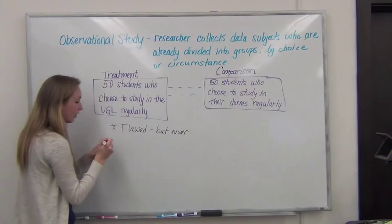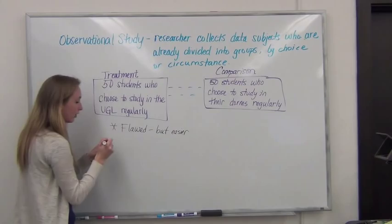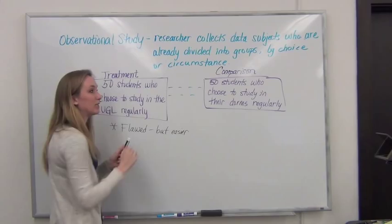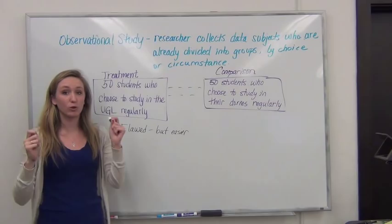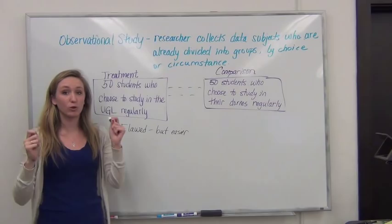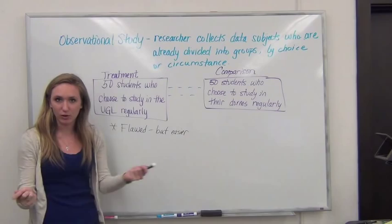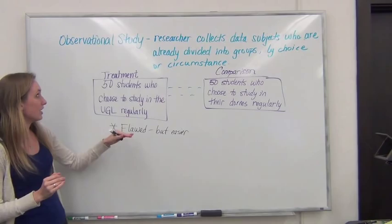And again, they're flawed because we can't assure ourselves that any difference that we see between these two groups is only, only because of this treatment. There could be other differences as well, because these participants decided which group to be in, or just by circumstance were in different groups already. So do you understand how this is definitely a flawed study, but it is easier? And that's why it's the more common one that we see. Any questions on this?